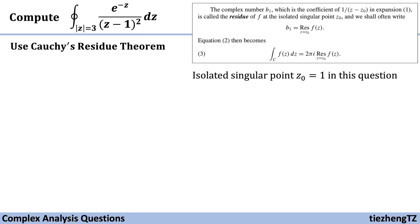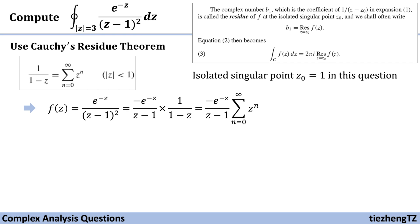We have z-1 in the denominator part, and we know 1/(1-z) can be expanded into the expansion form. So first, let's do something with the equation. We have f(z) = e^(-z)/(z-1)². Let's make a little change into -e^(-z)/(z-1) × 1/(1-z). So we can use the expansion form, which becomes -e^(-z) ∑z^n.